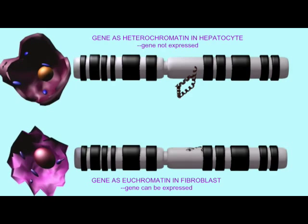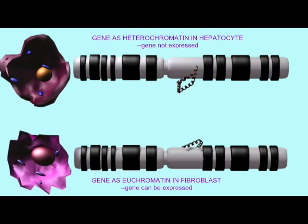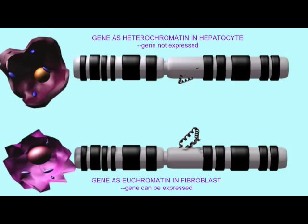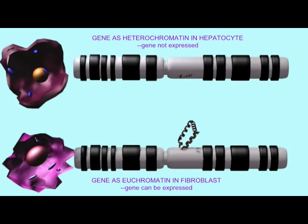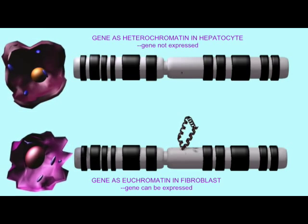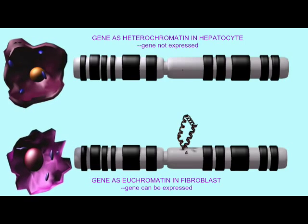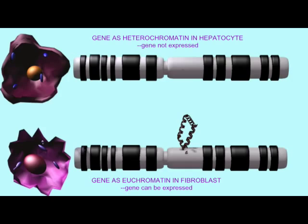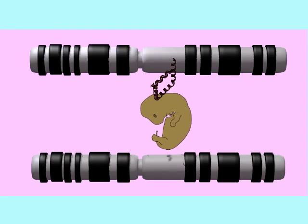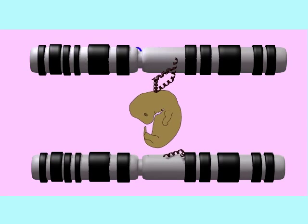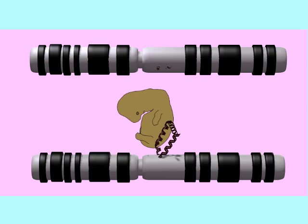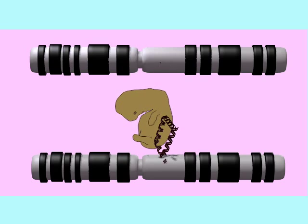Whether a section of DNA is in the form of heterochromatin or euchromatin may vary from cell type to cell type, given that some genes are expressed in some cell types while other genes are expressed in other cell types. A certain section of DNA may be heterochromatin at some stages of development, while the more loosely packed and expressed euchromatin at other stages of development.